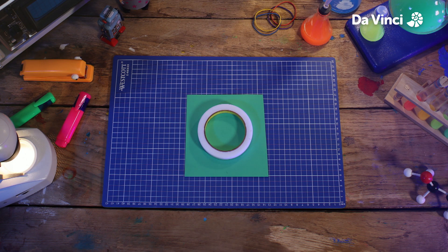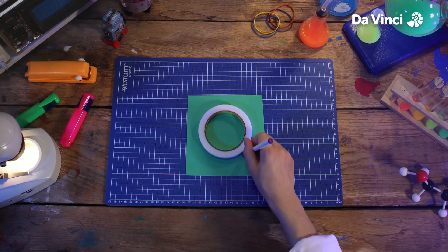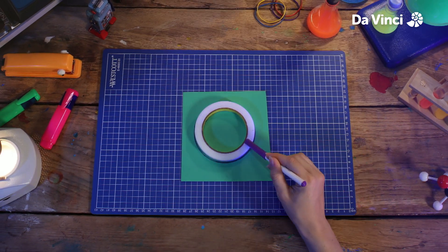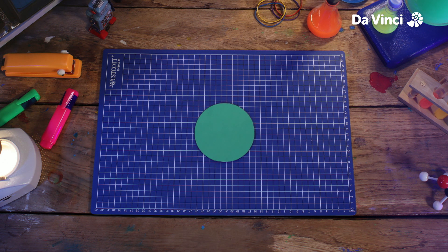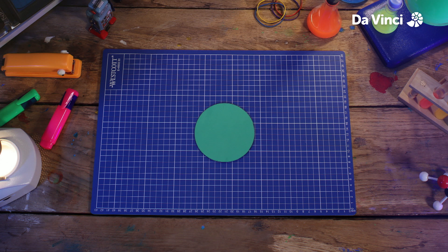Now I'm going to take this piece of paper, and using something round like this tape, I'm going to draw a perfect circle. Make sure you're as accurate with your cutting as possible. Get an adult to help you if you're having trouble.